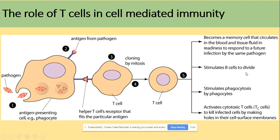These cloned T cells can then perform different functions. They can stimulate B cells to divide, stimulate phagocytosis by phagocytes, become memory cells that circulate in the blood ready to respond more quickly to the same pathogen in the future, or activate T cytotoxic cells.